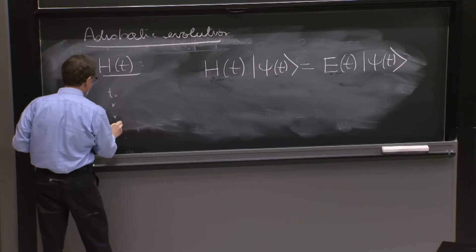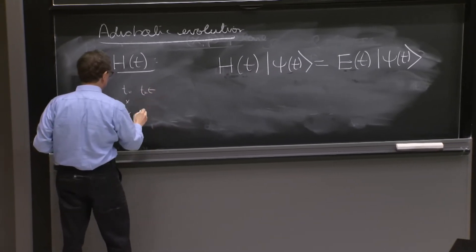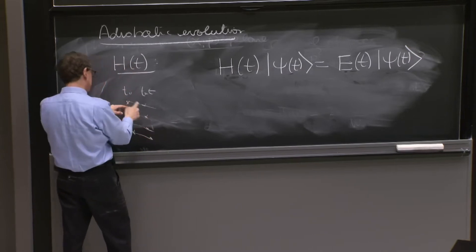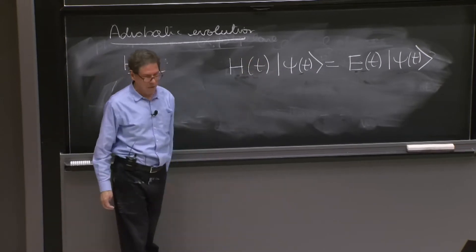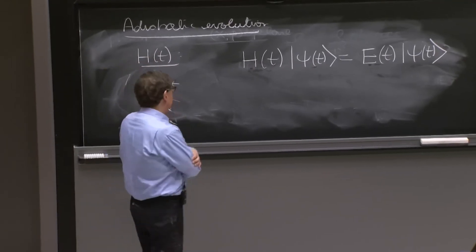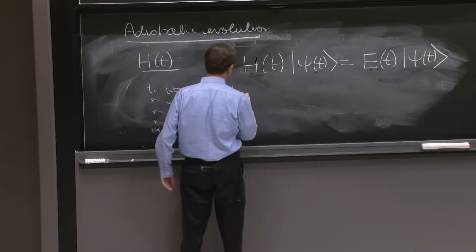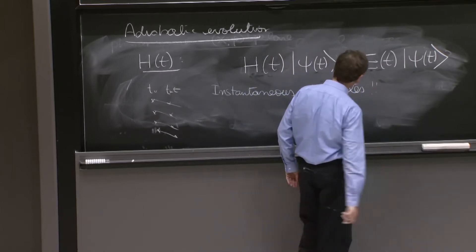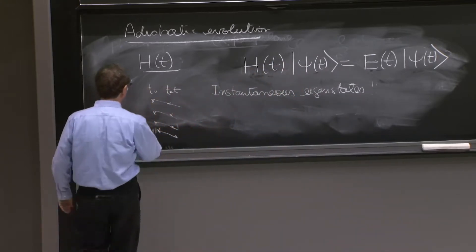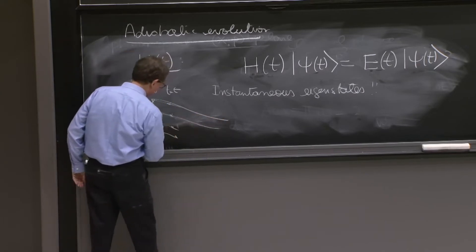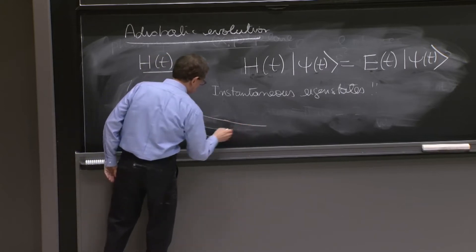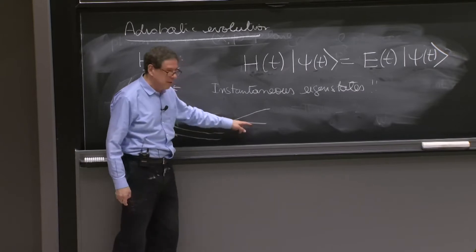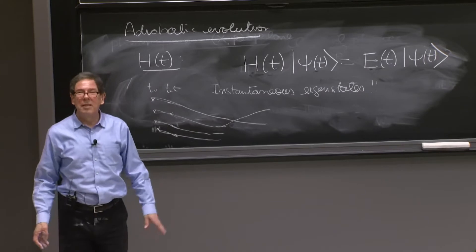At time equals 0 you get all these eigenstates, and at time equal ε you'll get these eigenstates. Presumably you can join them — you're not going to jump this to that because it's a big jump, and you can track them. These are called instantaneous eigenstates. They are a little strange because suppose those eigenstates cross. Then how do you know which one to follow — should you go here or should you go here? So let's just hope that doesn't happen.